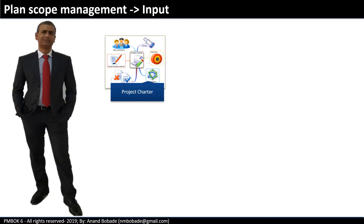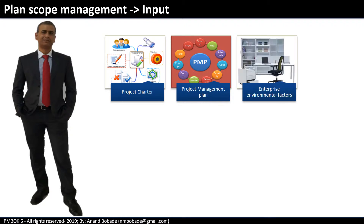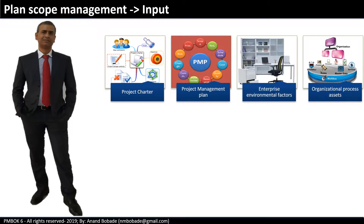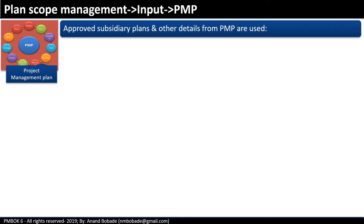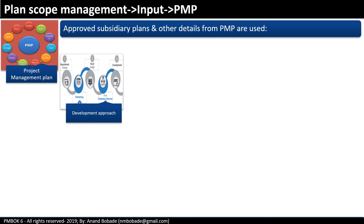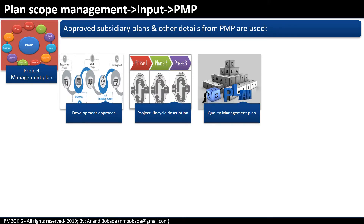Inputs are: project charter, project management plan, enterprise environmental factors, and OPA. The components of the project management plan that are relevant include the development approach — which might be predictive, incremental, or agile — the project lifecycle description, and the quality management plan.